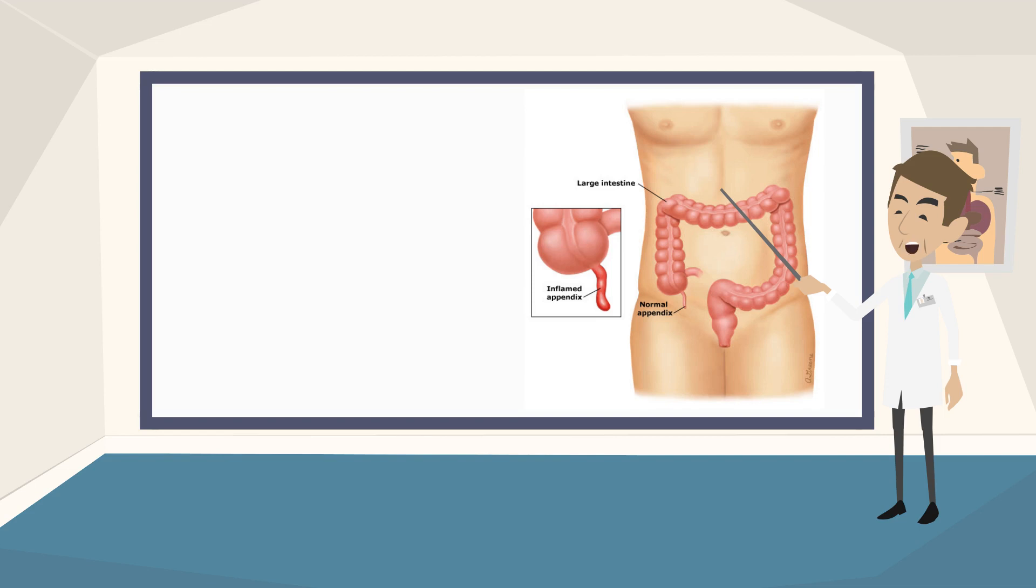The appendix is a long, thin pouch that is shaped like a finger. It hangs down from the large intestine, which is also called the colon.